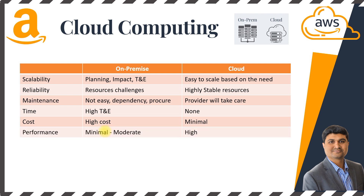The performance aspect on on-premise is minimal to moderate. The reason is that as time changes, you may have newer hardware, higher memory or higher capacity for network data transfer, but on-premise performance stays minimal to moderate over time. With cloud, since they make use of all the latest hardware, higher network bandwidth and data storage, the performance of a cloud infrastructure is really high.